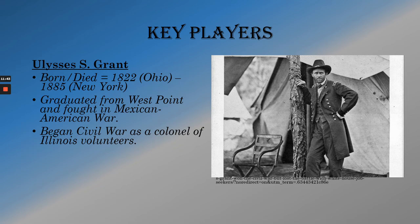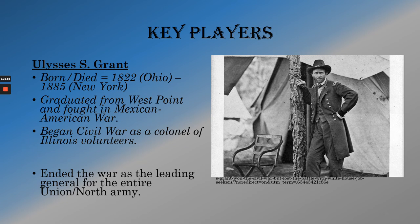Grant ended up leaving the army after the Mexican-American War, mainly because he had a drinking problem and kind of got pushed out. He then spent the better part of the 1850s basically just being poor and unsuccessful — he tried farming, that didn't work, and ended up working as a clerk at his brother's store. He was not successful outside the army. But then the Civil War began, and the Union needed all the people they could get. So they took him in as a colonel in the Illinois Volunteers, and as we'll see, he quickly worked his way up.